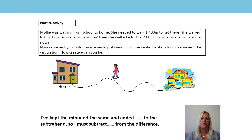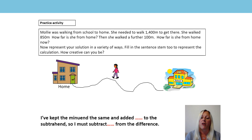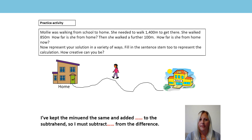Here's a practice question for you now, quite similar to the one we've just done together. Molly was walking from school to home. She needed to walk 1,400 metres to get there. She walked 850 metres — how far is she from her home? Then she walked a further 100 metres. How far is she from home now? My challenge to you is: can you represent your solution in a variety of ways? We've used bar models, we've used number lines, or you might have a more creative way. Fill in the sentence stem too to represent the calculation. Have fun!